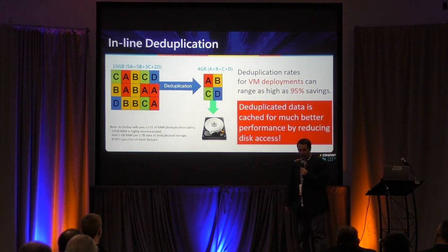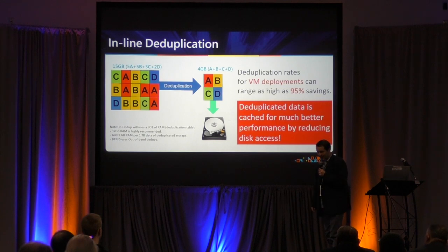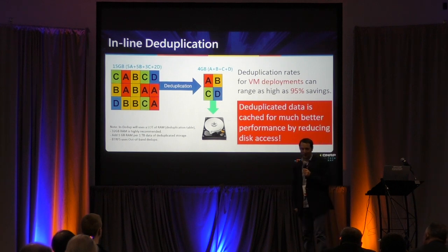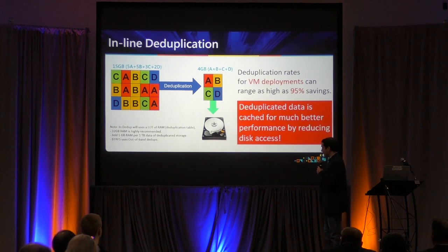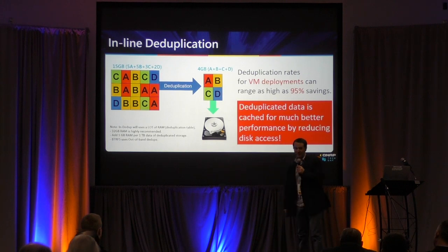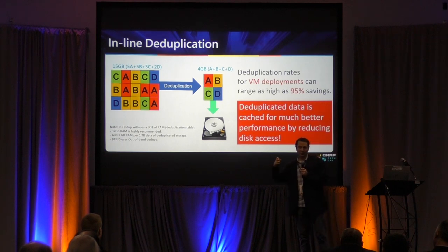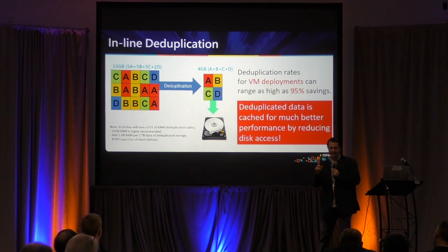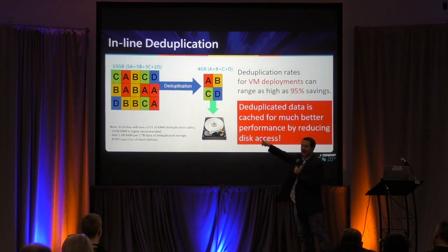One word of caution: our deduplication requires a lot of RAM. We recommend one gigabyte of RAM for every one terabyte of deduplicated data — that's very important. If you want to use deduplication, you better have a lot of RAM. Whenever you read a file you have to convert deduplicated blocks back, and in order to make that conversion you need metadata. We keep the metadata in RAM so we can convert very quickly without a performance cost.